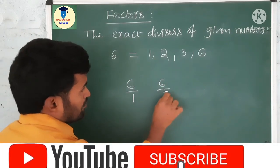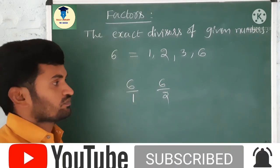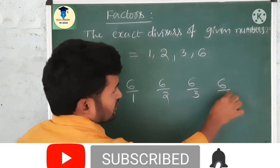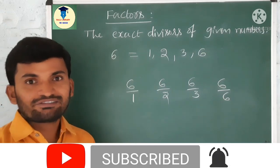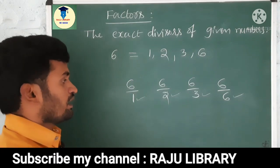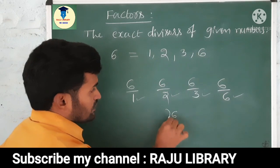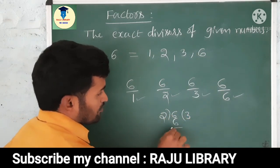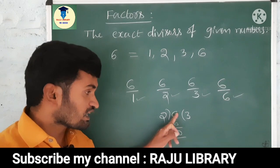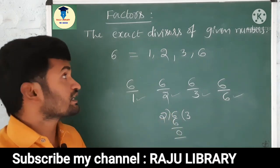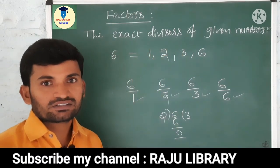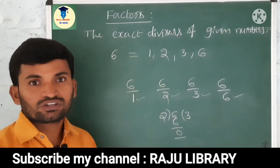6 is divisible by 2: 2×3 is 6. 6 is divisible by 3 also: 3×2 is 6. 6 is divisible by itself. Exact divisors means if you do actual division of 6 by 2, the remainder is 0. Whenever we get remainder 0, then we can say 6 is exactly divisible by 2. That's why the exact divisor of a given number is called a factor. So children, remember the factors definition.